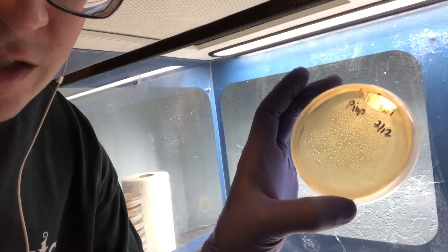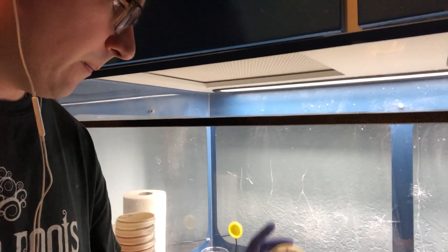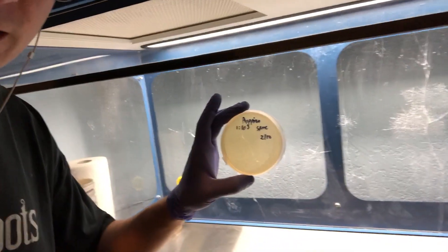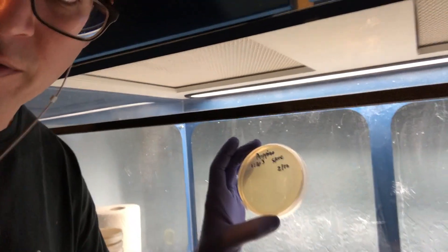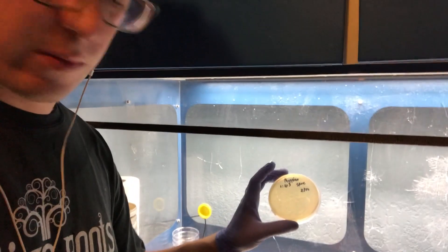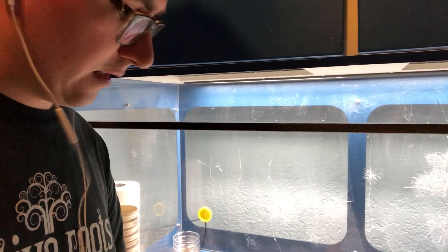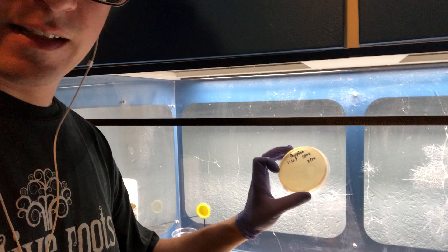You can see a little bit of condensation which could have contributed, but then here's another Pea Pino with the same dilution that is showing some growth. I'll go ahead and switch the camera around so I can describe what I'm looking at and what I do to note it.